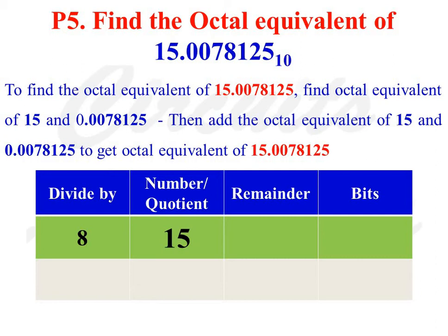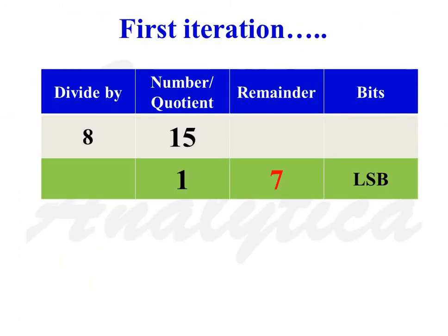Fifth problem: find the octal equivalent of 15.0078125 to base 10. Find the octal equivalent of 15 and 0.0078125 separately. For the integer part, divide 15 by 8 to get quotient 1 and remainder 7. This remainder is the LSB of the octal number.